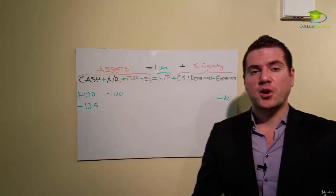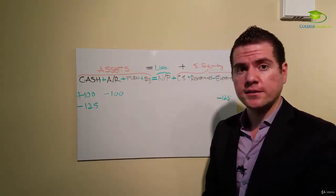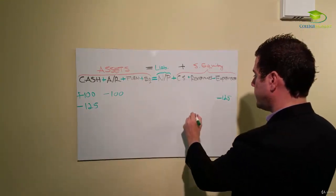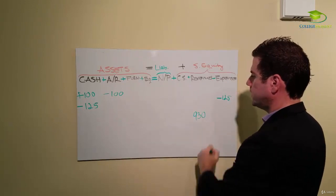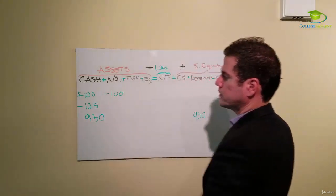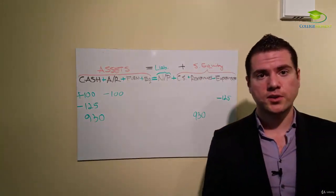The next one—we provided services for 930 dollars. What does that do? Those are revenues, 930, and we received cash 930 dollars.